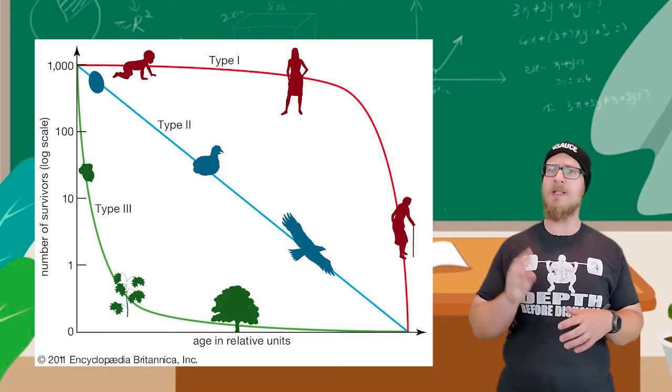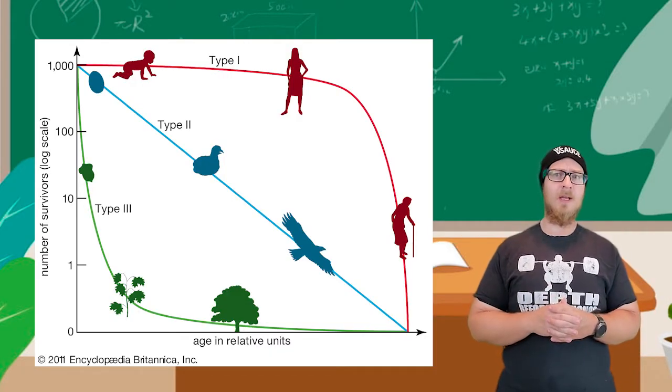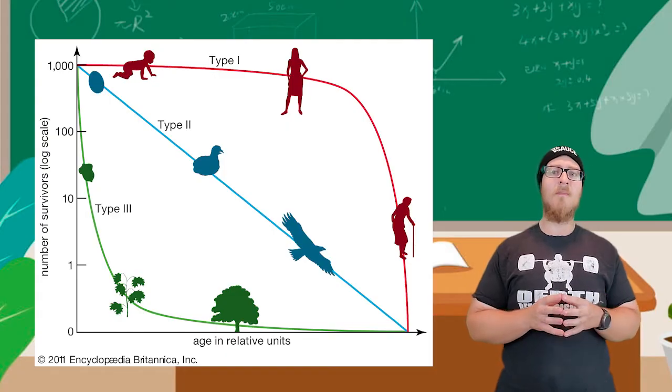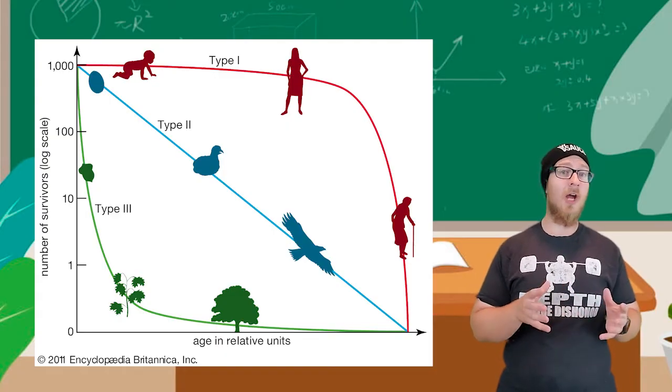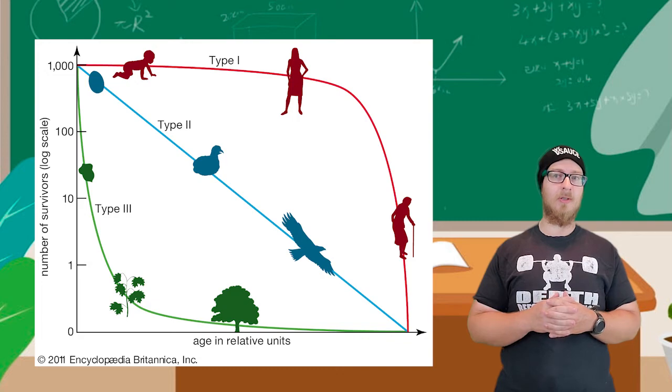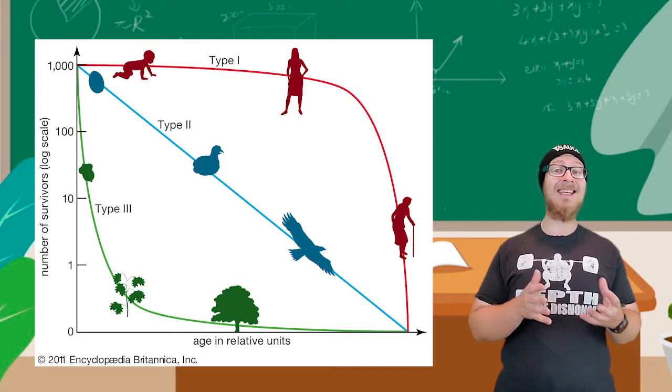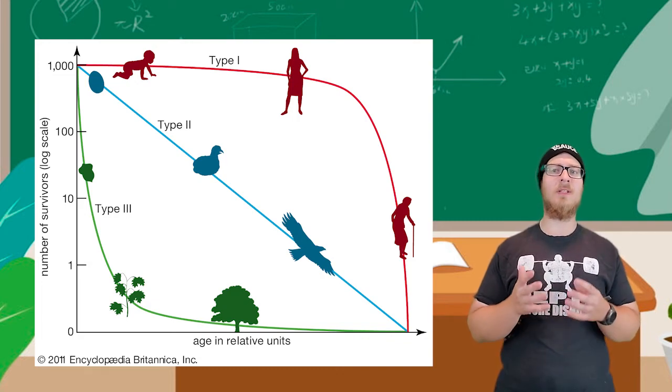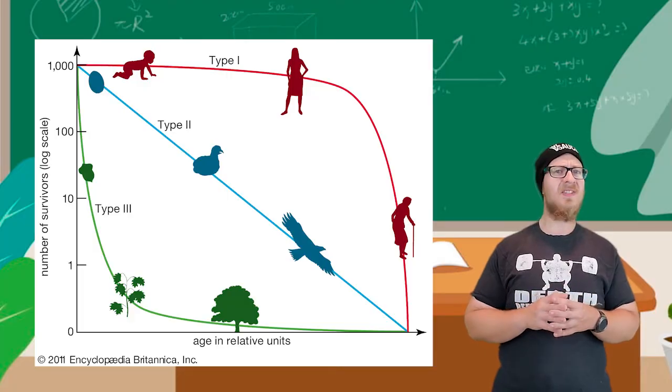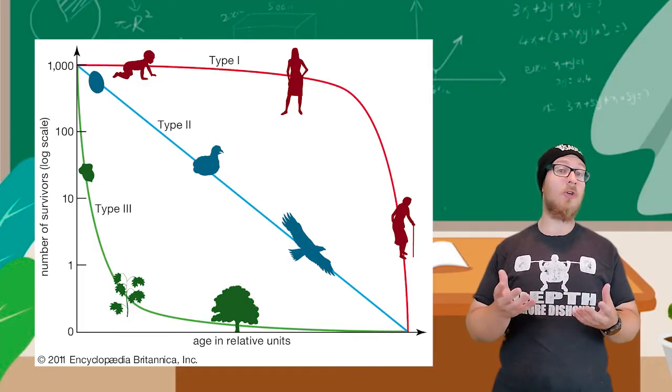There are three types of survivorship curves. In a Type 1 curve, many of the organisms survive childhood and make it to adulthood. The chance of dying increases as these organisms get older. This is very typical of large mammals.